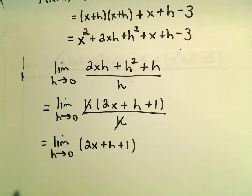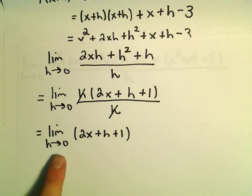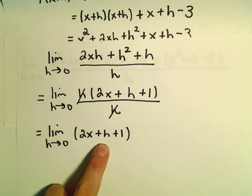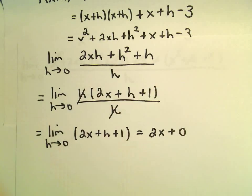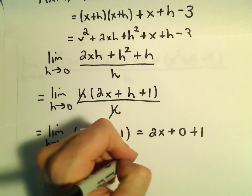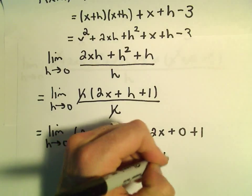And now, we can simply just plug in the value h equals 0. And if we plug in h equals 0, we'll just be left with 2x plus 0 plus 1. Or we'll get our solution of 2x plus 1.